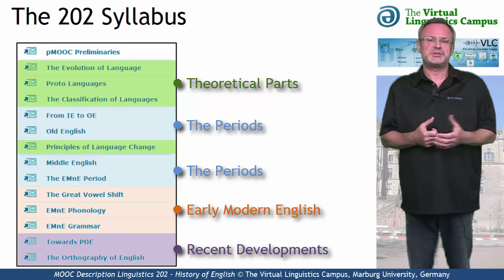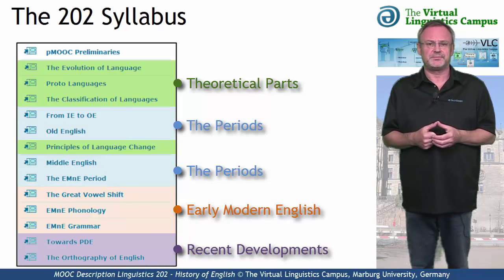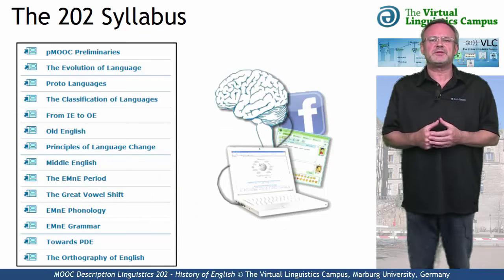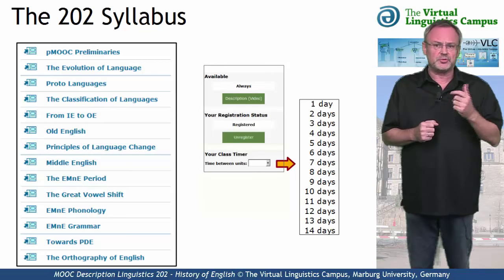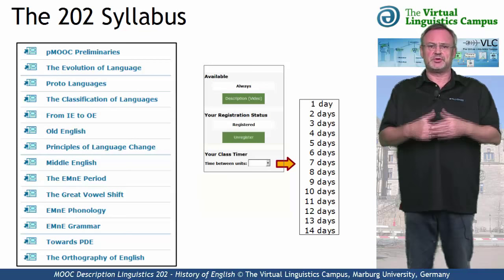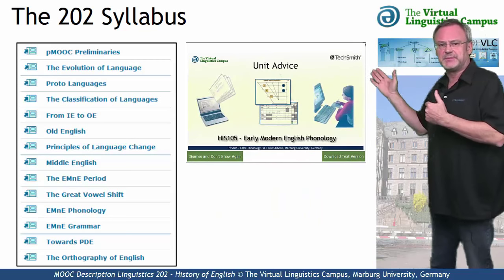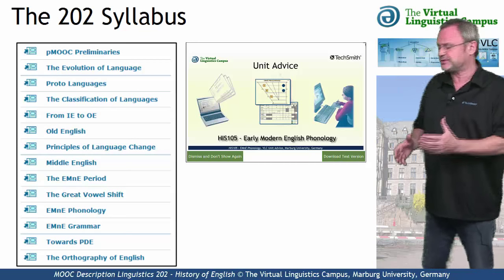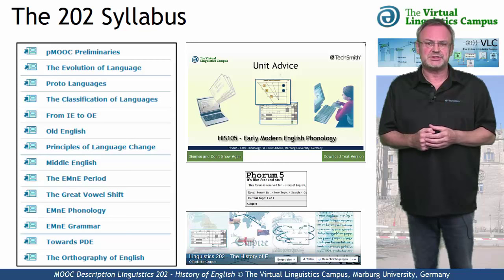The remaining part looks at recent developments with a final focus on present-day English orthography. As for the teaching and learning concept, studying online on the Virtual Linguistics Campus simply means: go through each unit at your own pace and make use of as many VLC options as possible. For example, use the advice options on each unit start site, or contact your peers via the class-related forum or via our Facebook group, MOOC Linguistics 202.